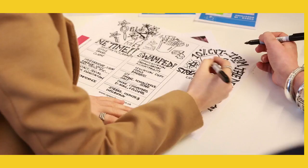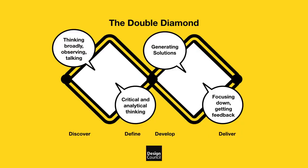The method invites collaboration and conversation between participants. It also invites a playful, physical and visual approach. If we consider it in terms of the double diamond model, RIP & MIX is used in the develop phase where we want to generate a broad range of possible solutions.